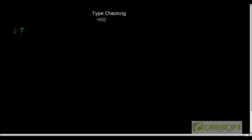So first, how do we classify the given type checking? We classify it as static versus dynamic type checking. A program is executed in two phases: first it is compiled, and then it is executed at runtime.